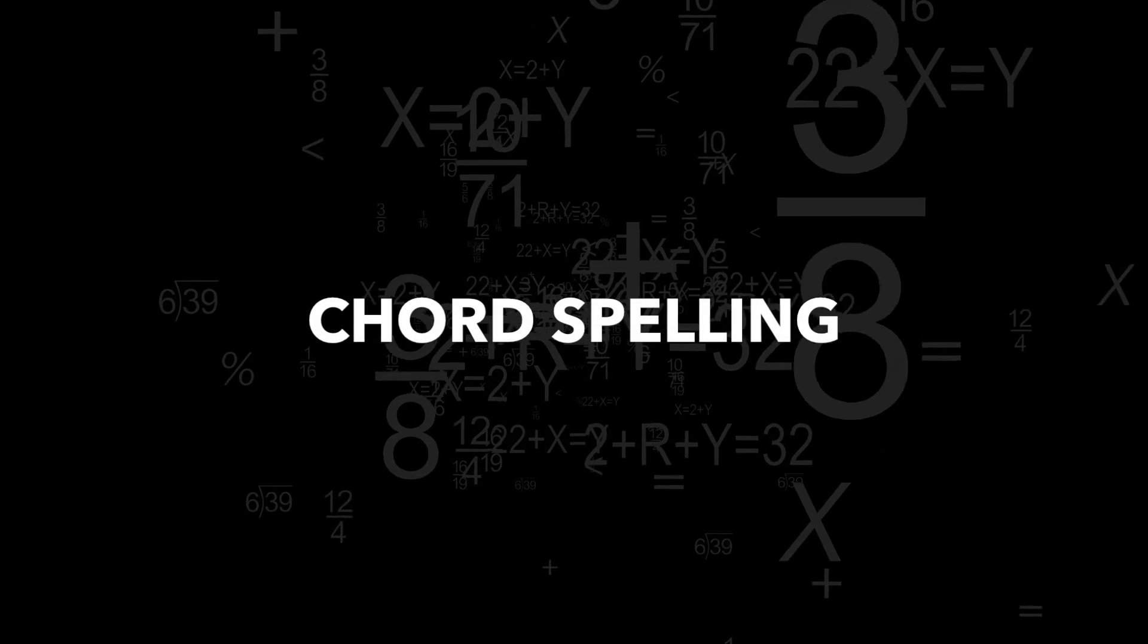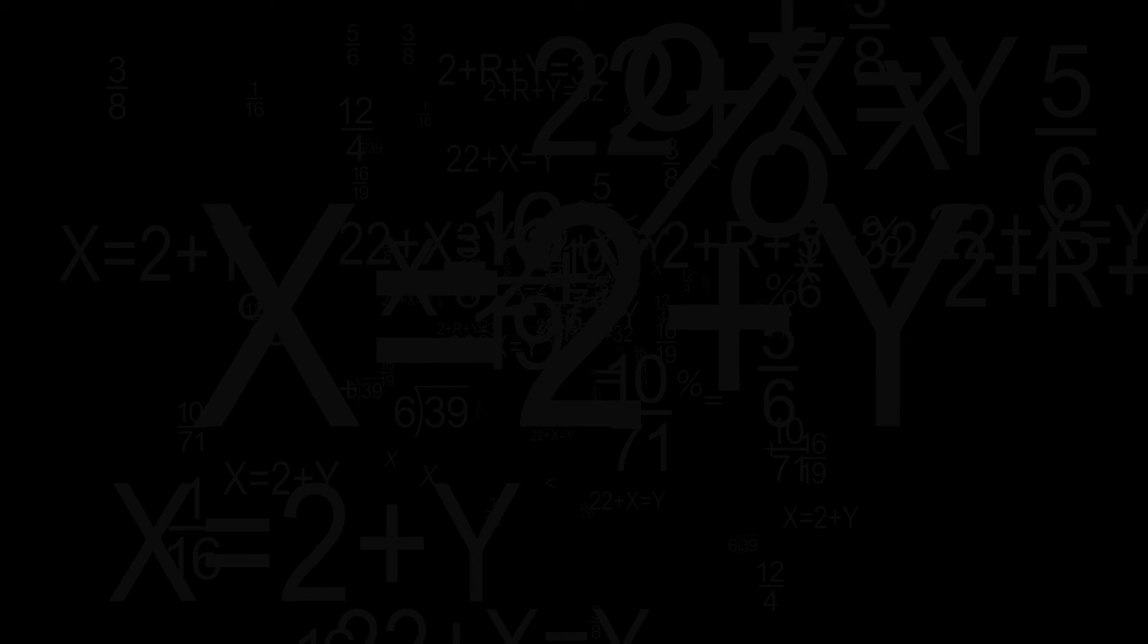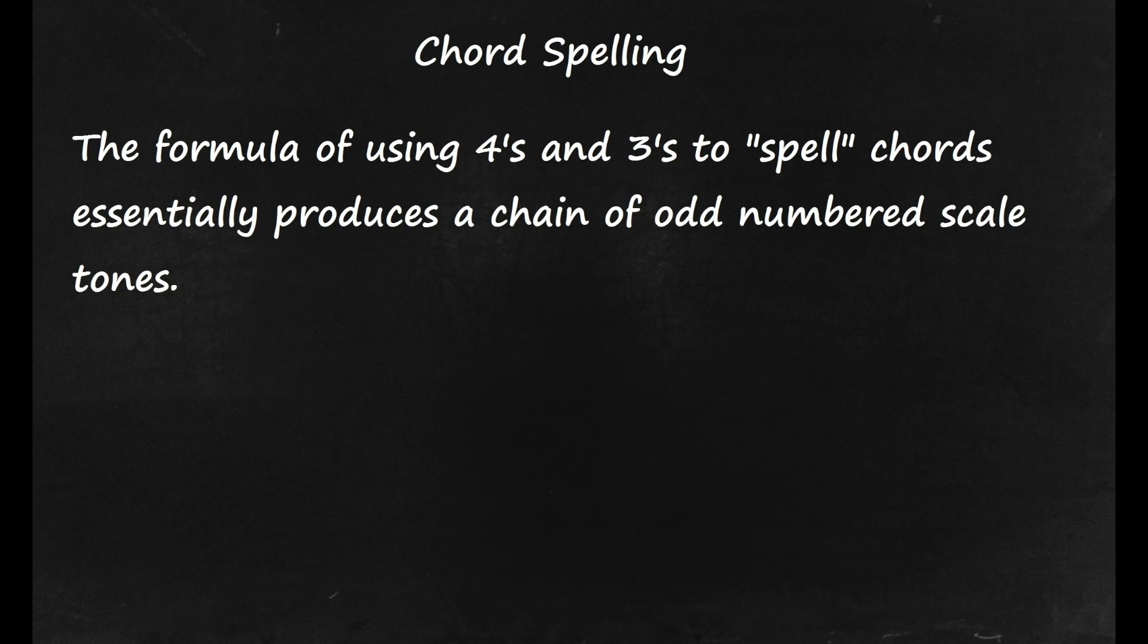Chord spelling makes sure that you have the right notes in your chord according to its name. The formula of using 4s and 3s to spell chords essentially produces a chain of odd numbered scale tones. A triad is made up from using scale tones 1, 3, and 5.